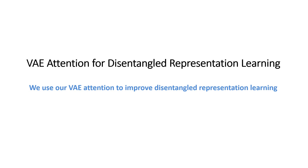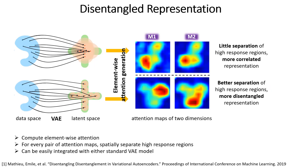In the following slides, we show how our VAE attention can help bootstrap the VAE into learning to improve the latent space disentanglement. Given a standard VAE, our intuition is to visualize each latent space dimension using attention and to force them to be as separable as possible. If we can achieve this, we are able to see better separation of high-response regions, which shows better disentangled representation.